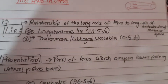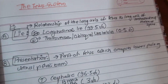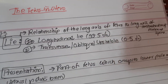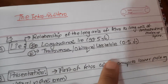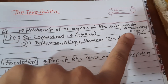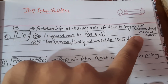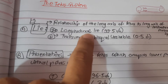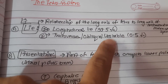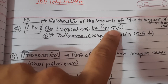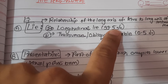Firstly, 'lie' refers to the relationship of the long axis of the fetus to the long axis of the centralized uterus or maternal spine. Lie can be longitudinal, transverse, oblique, or unstable. Longitudinal lie is present in 99% of cases and is the most common.